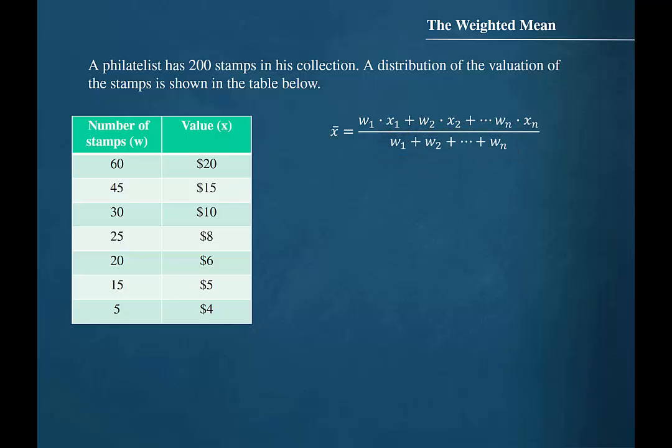So we must first determine what are the weights and what are the data values. We are finding the mean value of each stamp in the collection. So we will assign the variable x to the dollar values, and the weights then will be the number of stamps at each value.